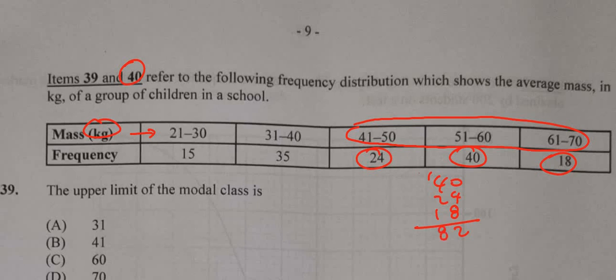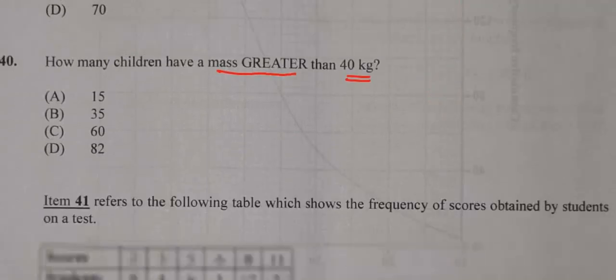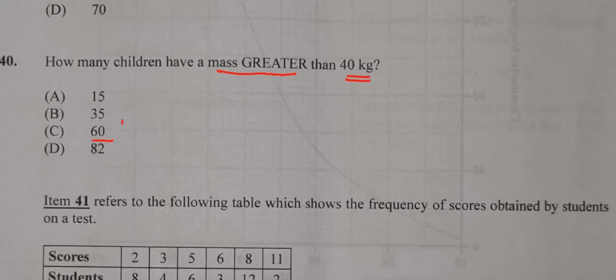So we have 82 children, and that's how many children have a mass greater than 40. That's the answer.